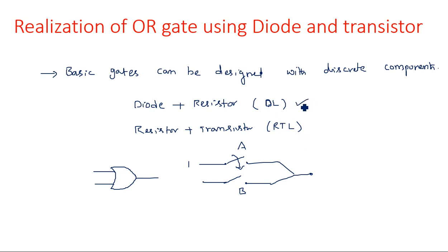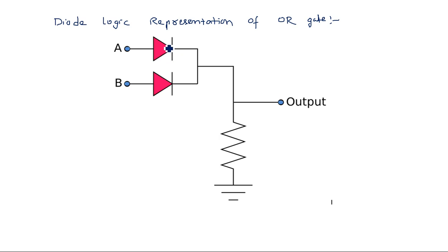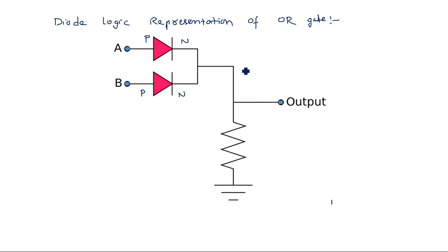Now let us see how to realize the OR gate using diode logic. In this diode logic representation of the OR gate, the diodes must be connected in forward biased condition — P type at the input side and N type at the output side. For each input, one diode is connected in parallel. So A is connected to the first diode, B to the second diode, and so on — N number of inputs means that many diodes in parallel. The N terminals of all these diodes are connected together and taken as output.